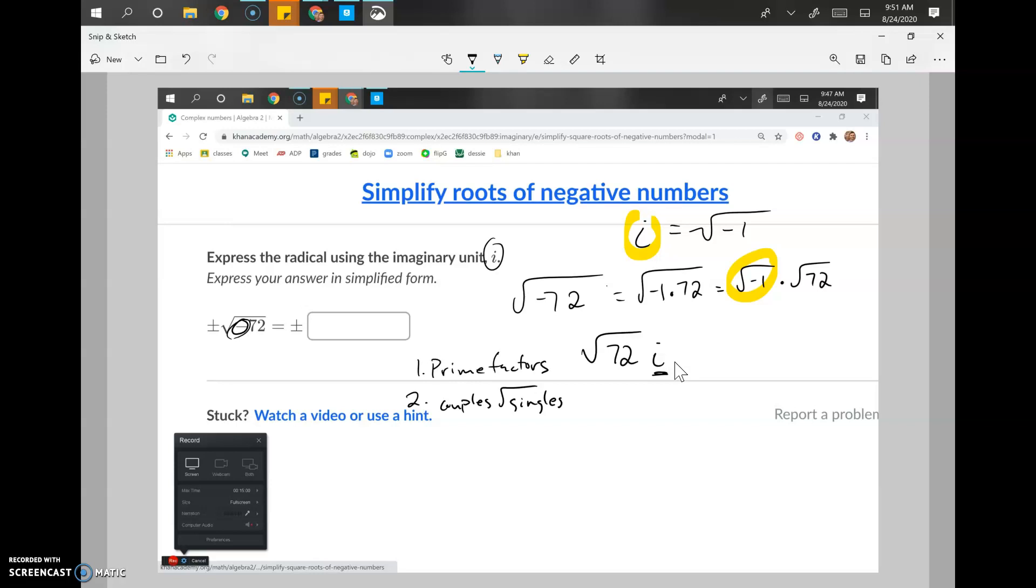Couples go to the movies, couples go to mini golfing, couples go to the mall. Singles stay home, eat ice cream, watch Netflix, play video games, those types of things. So let's go ahead and figure out who's going out and staying in. 72. Think of two numbers in your mind that multiply to 72. Doesn't matter which ones you select. I'm gonna go with 8 times 9.